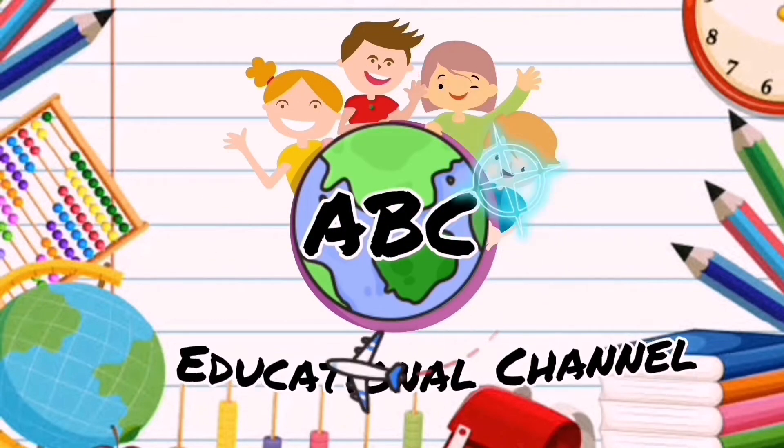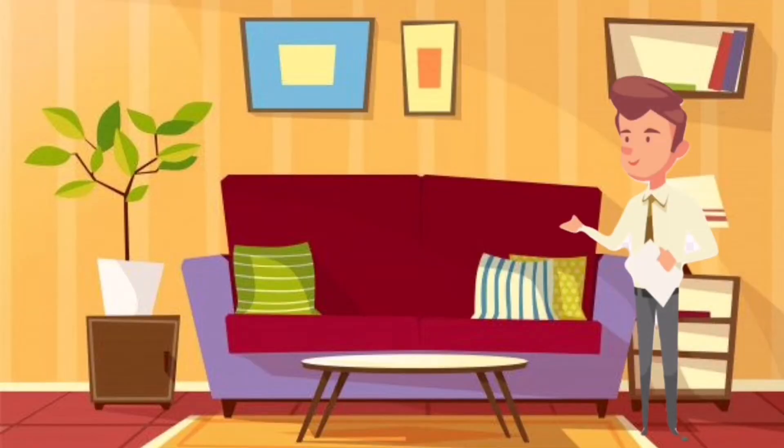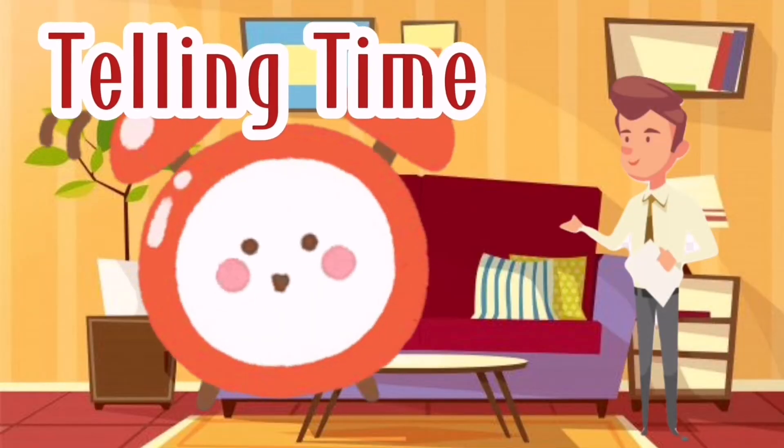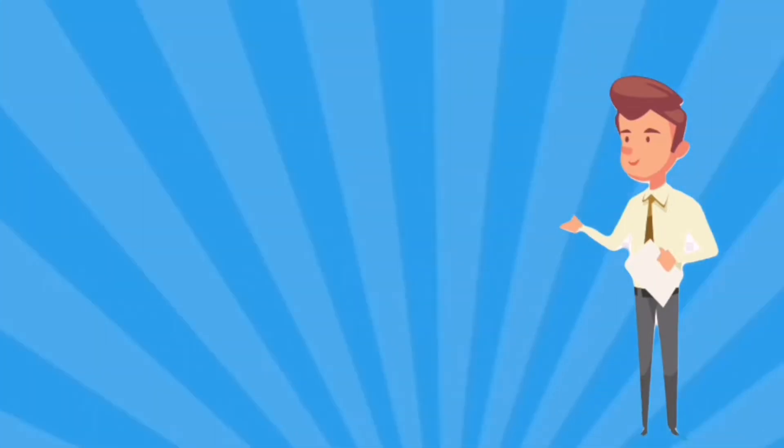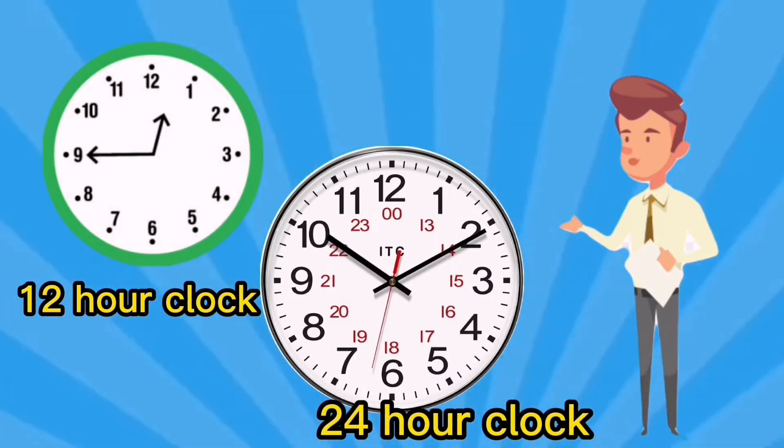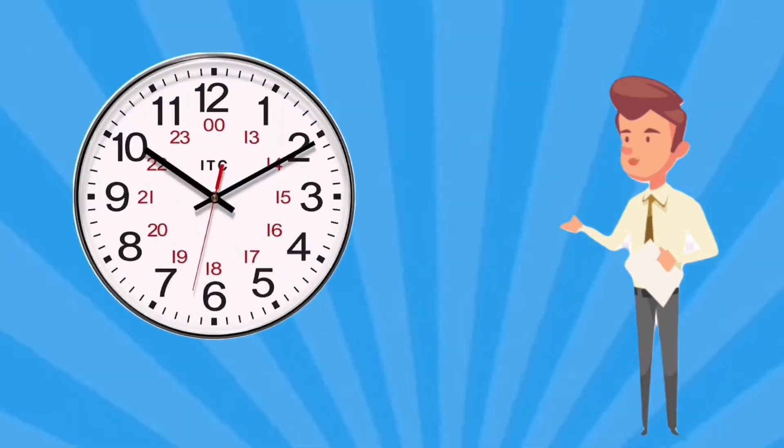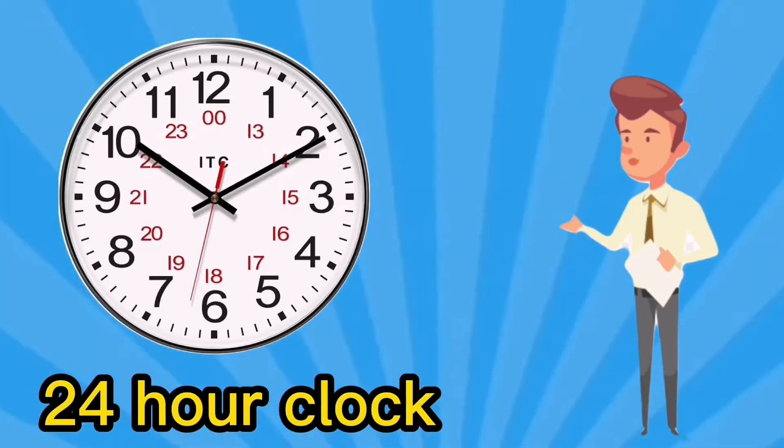ABC Educational Channel. Are you ready to learn how to tell time? Let's go! There are two ways of telling the time in English: the 12-hour clock and the 24-hour clock. In the 24-hour clock we use the numbers from 0 to 23 to indicate the hours.